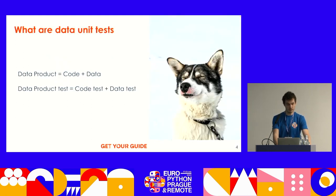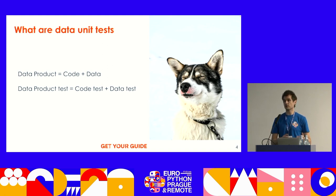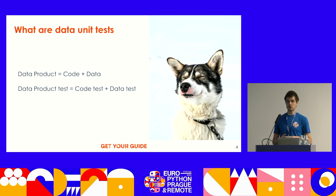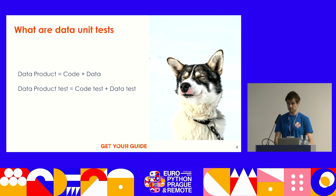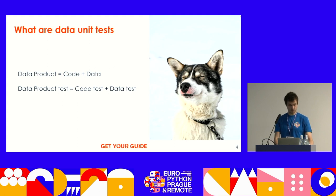If you think about data products, this is a combination of code with data. In classical software development, it's common practice to ensure the quality of your code through automated tests. But the focus there is on testing the code itself. To ensure the quality of your data product, you need to validate the code, of course, but also the data — because it's part of what ends up being used. One way to validate the data is to have data unit tests.